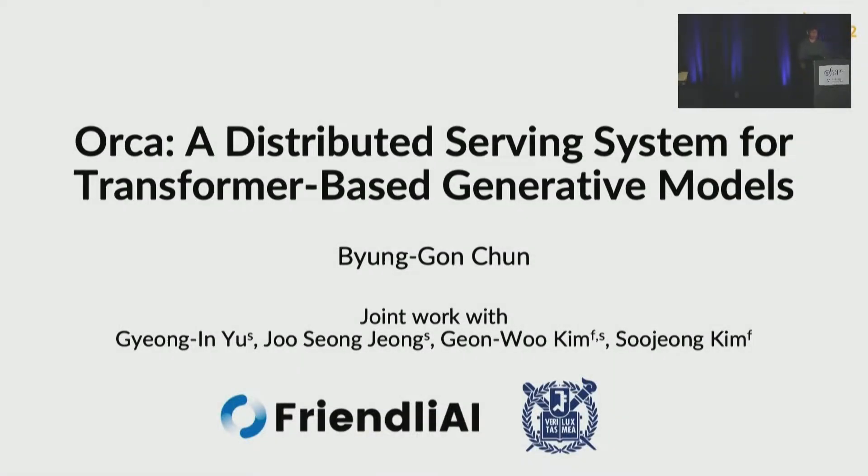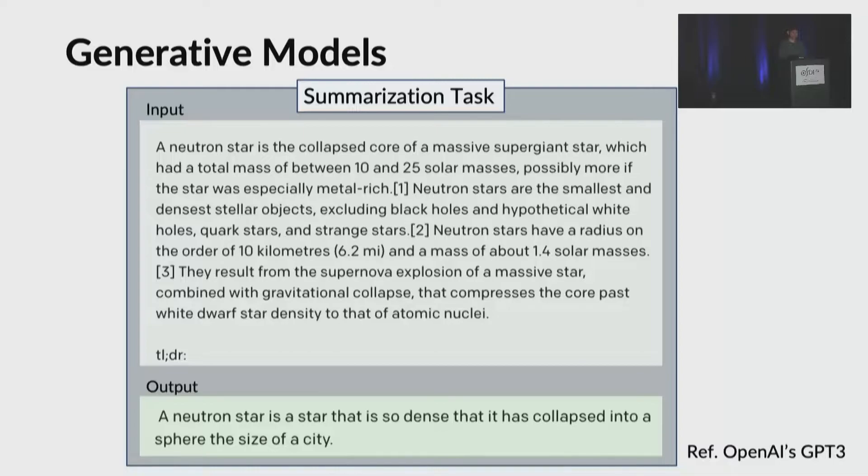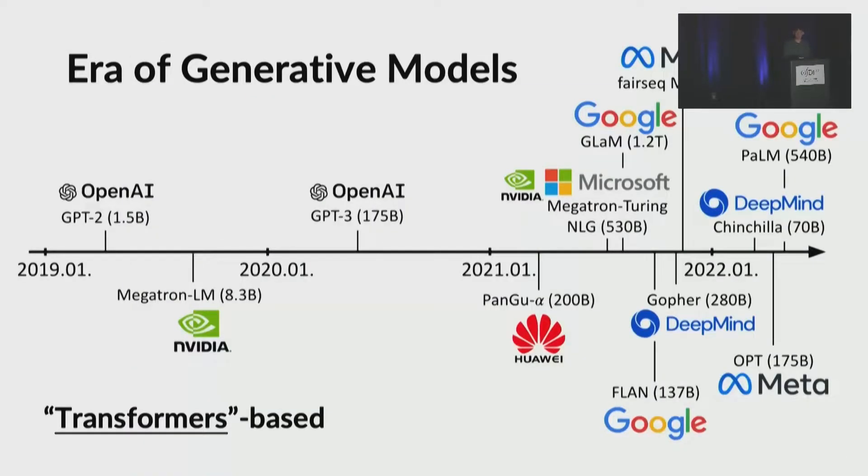Today I'm going to talk about Orca. This is joint work with my colleagues at Friendly AI and SNU. In recent years, big transformer-based generative models have received much attention thanks to their modeling power. This example here shows OpenAI GPT-3 summarizing a paragraph about a neutron style, which is amazing. Many companies have been attracted by the amazing capabilities of generative models, developing their own huge models.